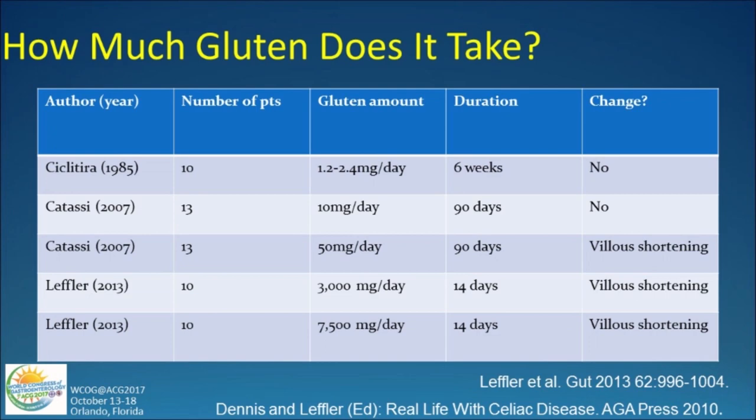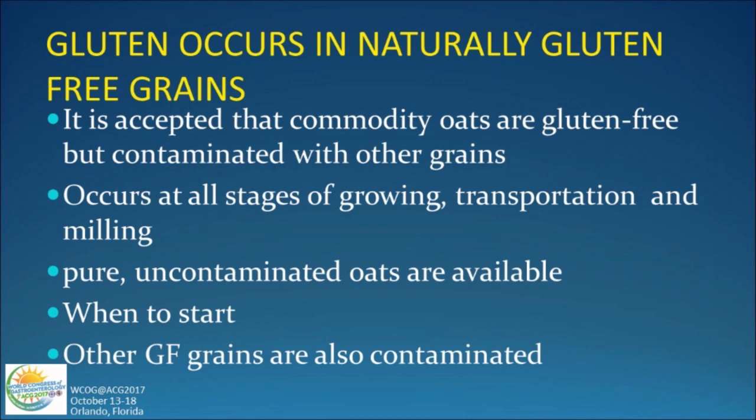It does not take much gluten to cause inflammation and villus atrophy. If you assume a slice of bread has about three grams of gluten, 10 milligrams is probably tolerated, but 50 to 100 milligrams is not. Even when patients attempt to obtain gluten-free grains, they're usually contaminated. Oats is a great example — contamination occurs in the field, transportation, and the milling process. One can obtain pure uncontaminated oats, but they're more expensive and harder to obtain.